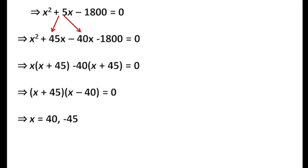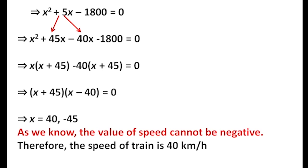Since x represents the speed of the train, the speed cannot be negative. Therefore, the negative 45 value is rejected. The speed of the train is 40 kilometers per hour.